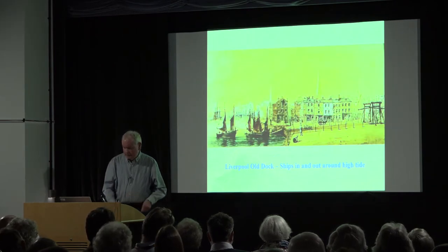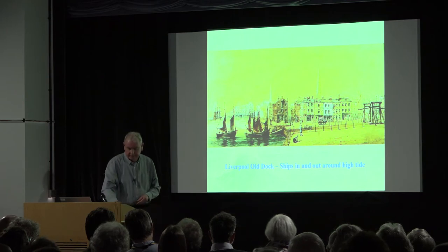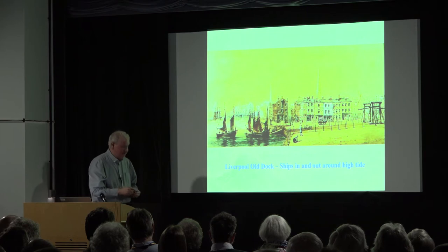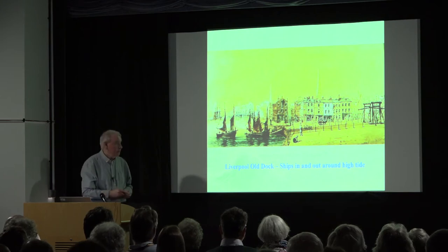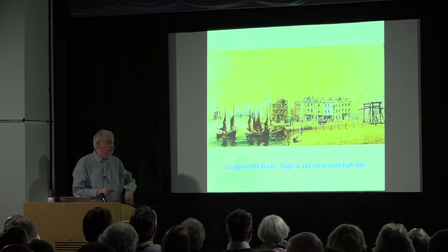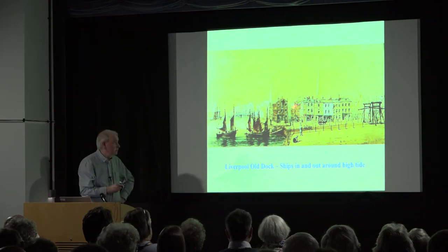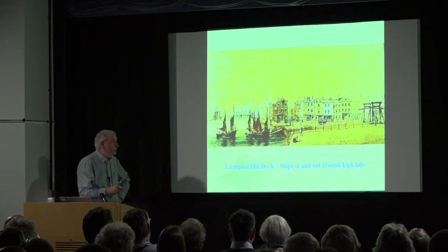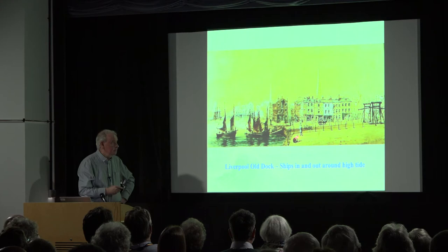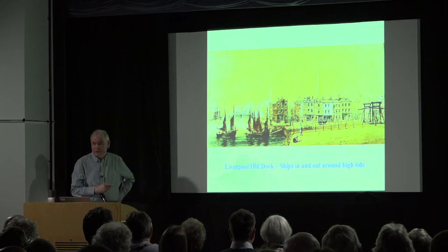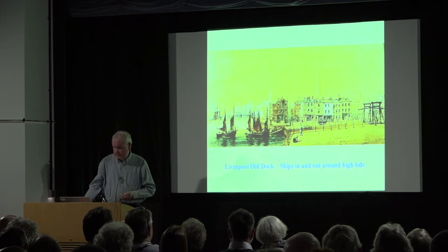This is the entrance of the Old Dock — one of Herdman's paintings, painted from roughly where we are now. This road here is what's now the Strand dual carriageway. These little ships were about 20 or 30 tons — they could easily get into the dock at high tide. But at low tide, all this was mud, as I showed you in the first photograph, and even a small ship like this couldn't get into the dock. That's been true for most of Liverpool's history.